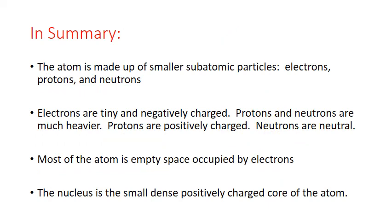In summary, the atom is made up of smaller subatomic particles: electrons, protons, and neutrons. Electrons are tiny and negatively charged. Protons and neutrons are much heavier. Protons are positively charged, and neutrons are neutral. Most of the atom is actually empty space occupied by those tiny electrons. But at the core of the atom is the nucleus — a small, dense, positively charged part of the atom.